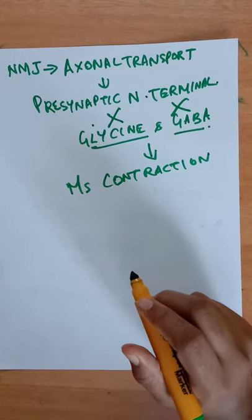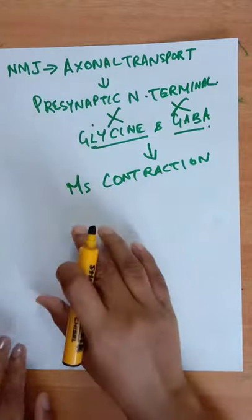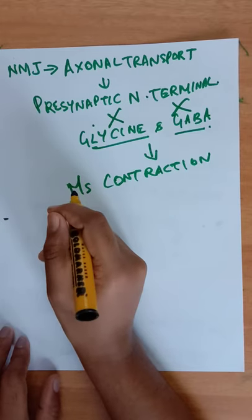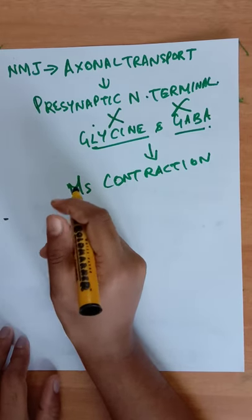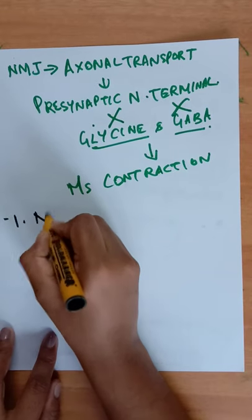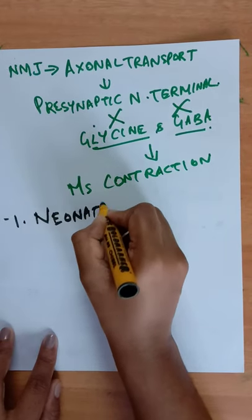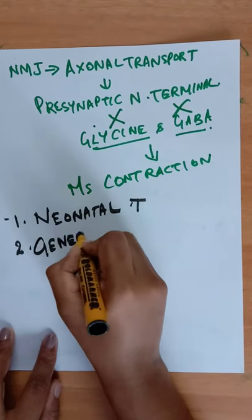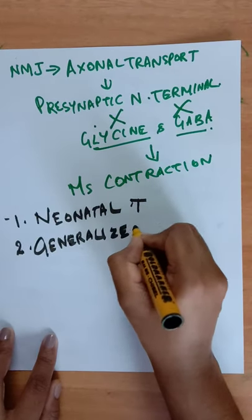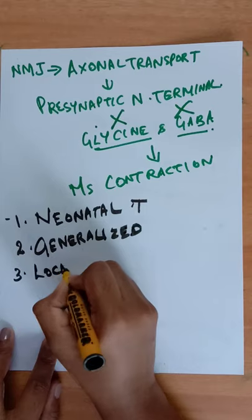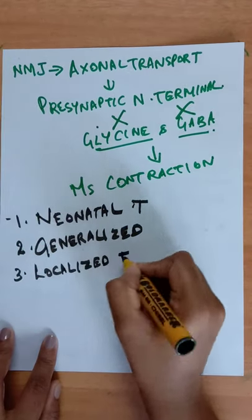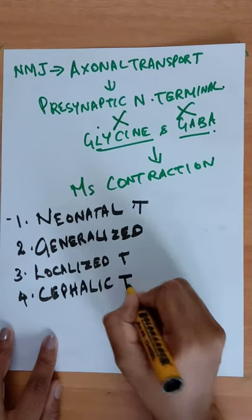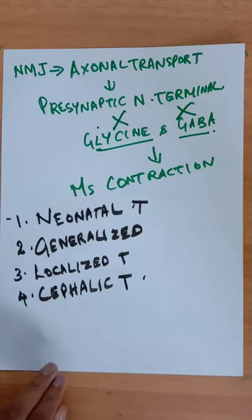Next, about the clinical features. They usually mainly affect unimmunized and partly immunized individuals. The disease may occur in various forms: neonatal tetanus, generalized form, localized tetanus, and cephalic tetanus.